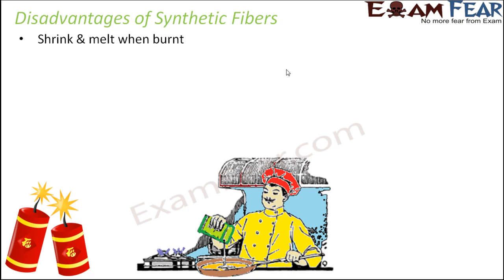However, there are certain disadvantages associated with synthetic fibers. One major disadvantage is that they shrink and melt when burned. If they come in contact with fire, these fibers tend to melt completely, posing a huge risk. If someone is wearing a synthetic fabric and comes in contact with fire — near a candle, firecracker, or gas oven — that fabric easily catches fire, the fiber starts melting, the fire sticks to the body, and it can cause severe burns.